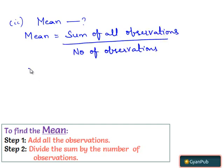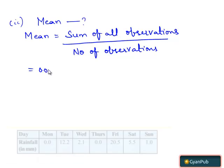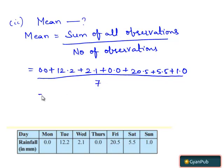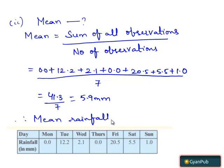Which equals 0.0 plus 12.2 plus 2.1 plus 0.0 plus 20.5 plus 5.5 plus 1.0, divided by 7, the number of observations. When we solve this, we get 41.3 divided by 7, which equals 5.9 mm. Therefore, mean rainfall for this week equals 5.9 mm.